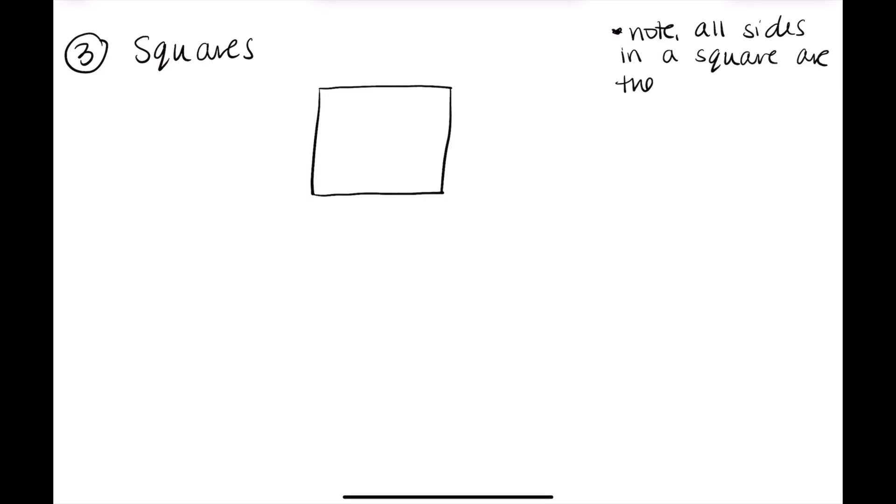So that means that all of the sides are equivalent. In other words, they're all the same length. So any side that we're given, we know that all of the other four sides are going to be the same.